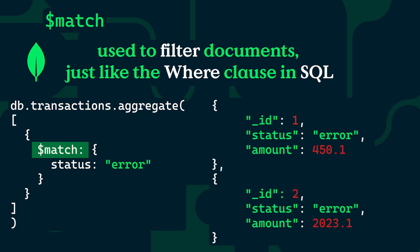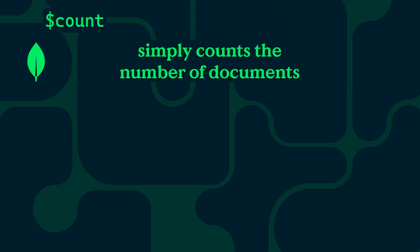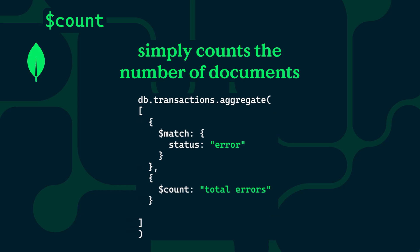When we run this, the result will include only those transactions that match this condition. Another useful stage is dollar count. As the name suggests, it simply counts the number of documents that made it through the pipeline. In our transaction example, we could add a dollar count at the end to see how many documents have the status error.